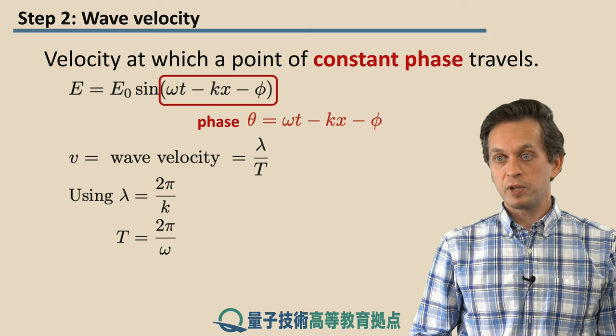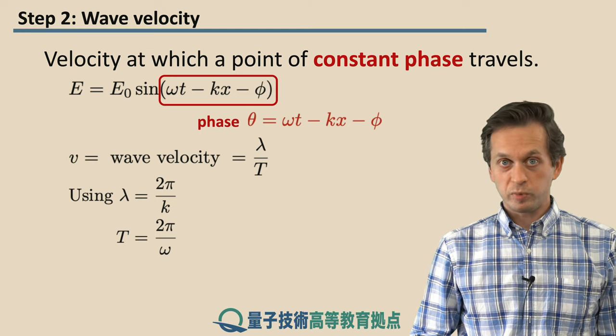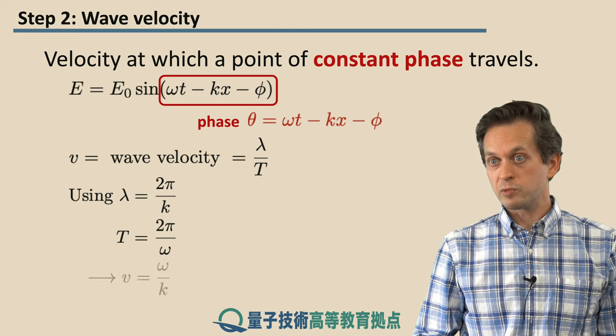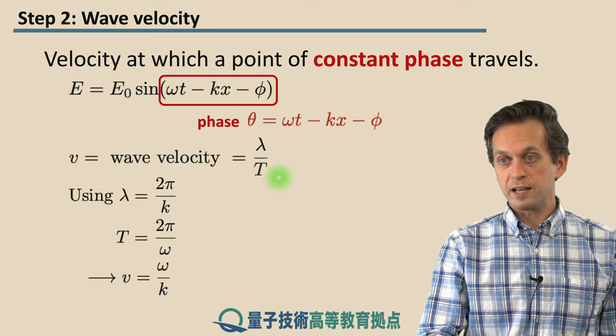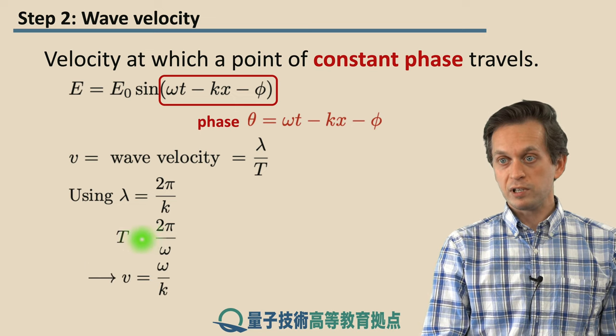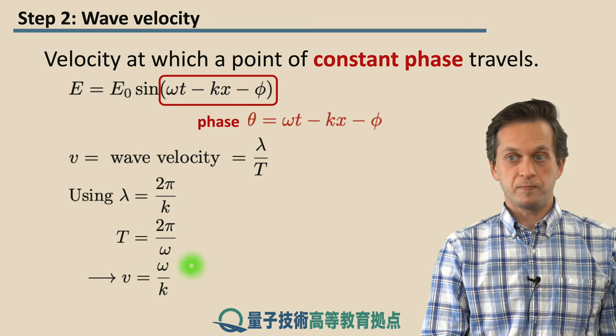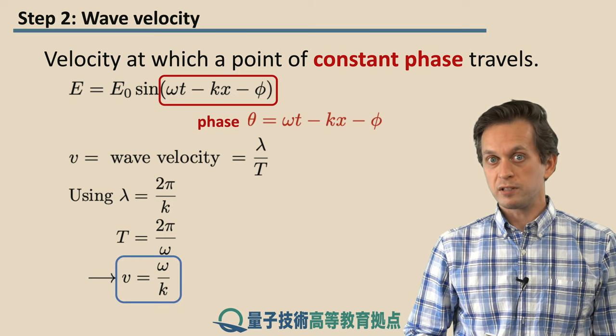So, substituting for lambda and substituting for T, we can obtain the expression for wave velocity in terms of ω and k as v, the wave velocity, is ω over k. So now we know how a single wave propagates.